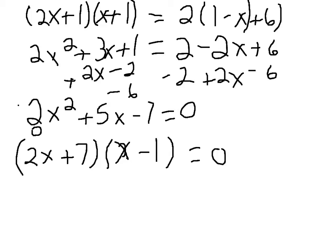Okay, so then now you set both parentheses equal to 0. So you get 2x plus 7 equals 0 and x minus 1 equals 0.